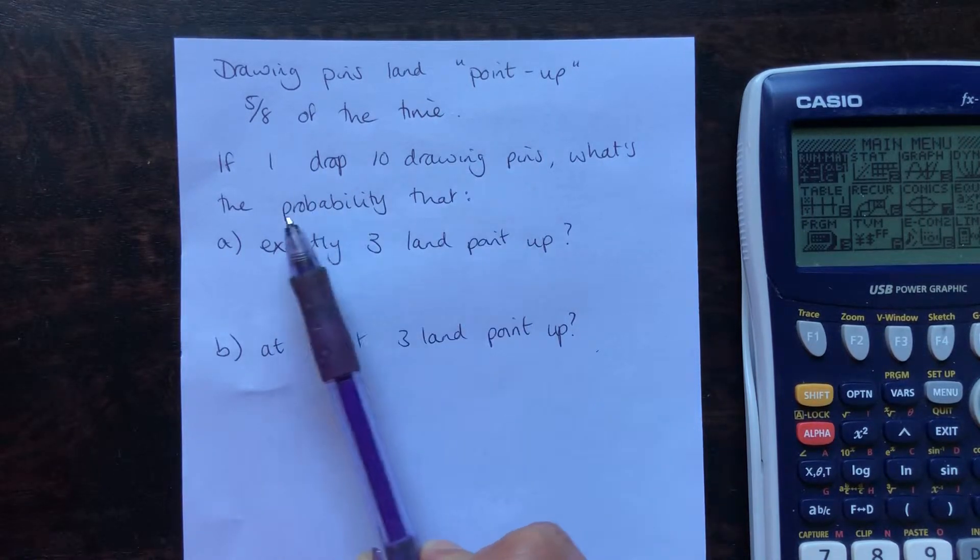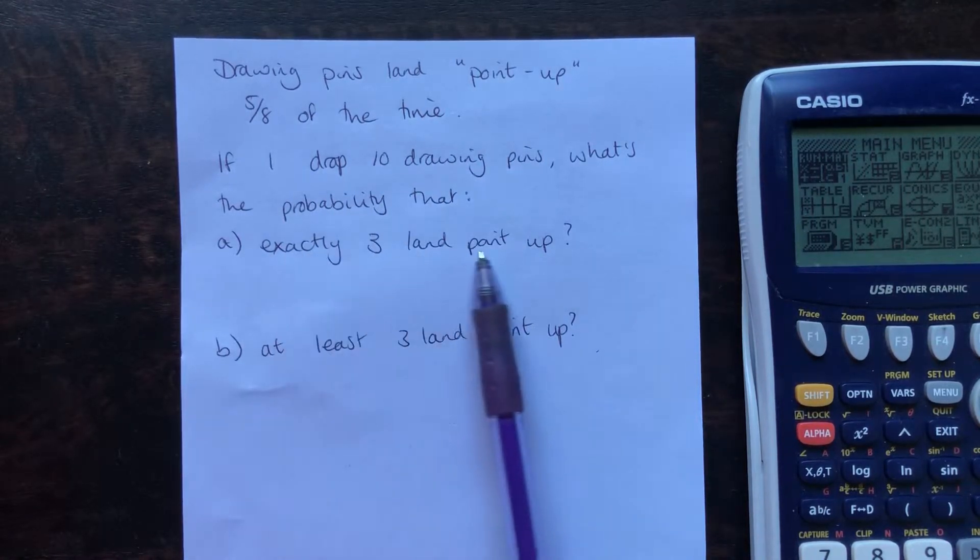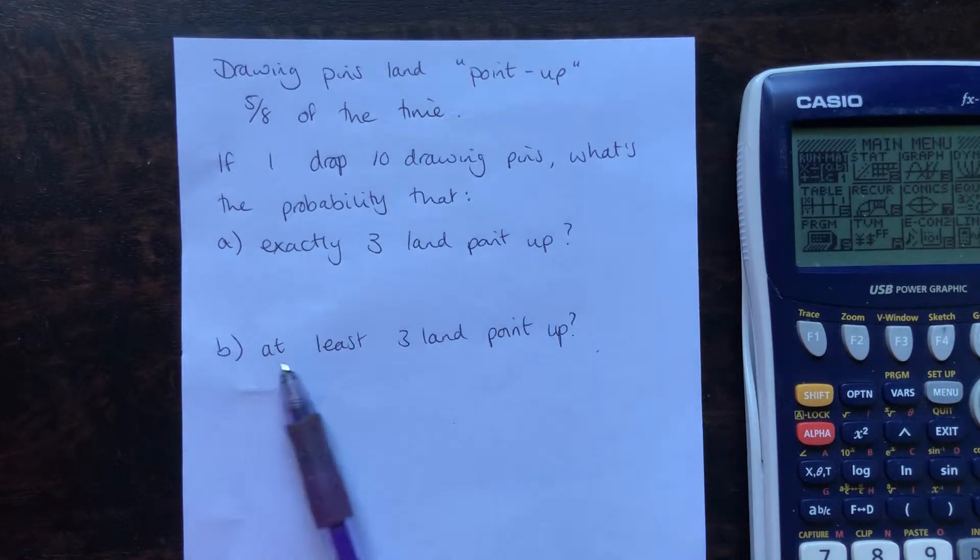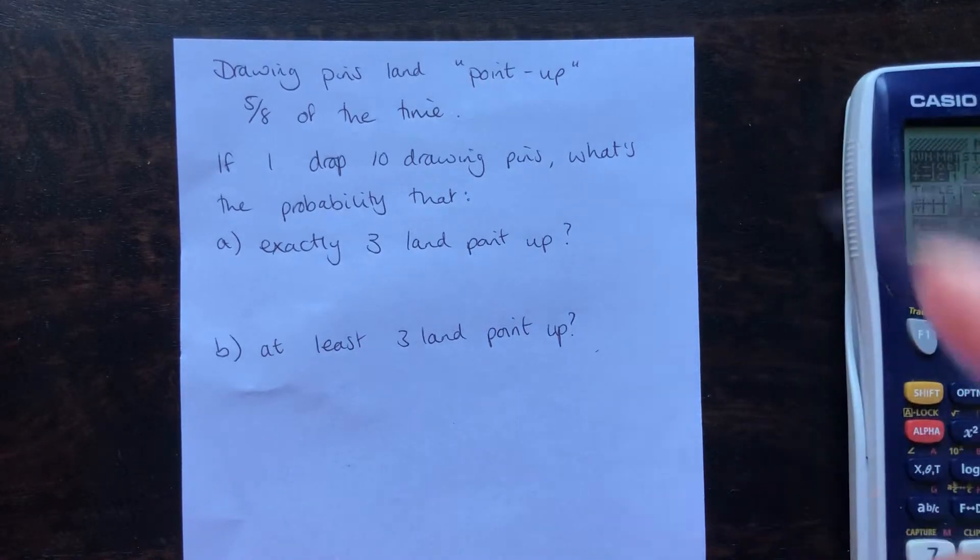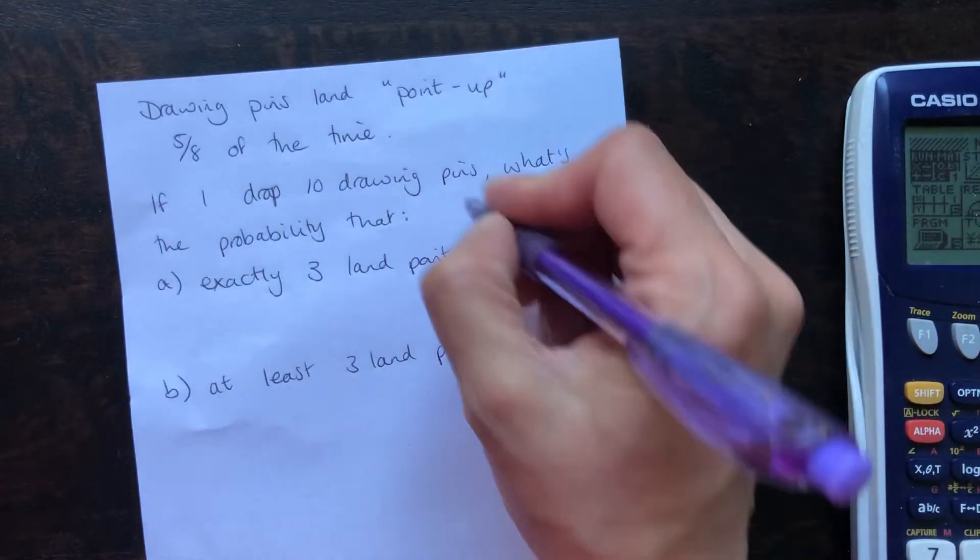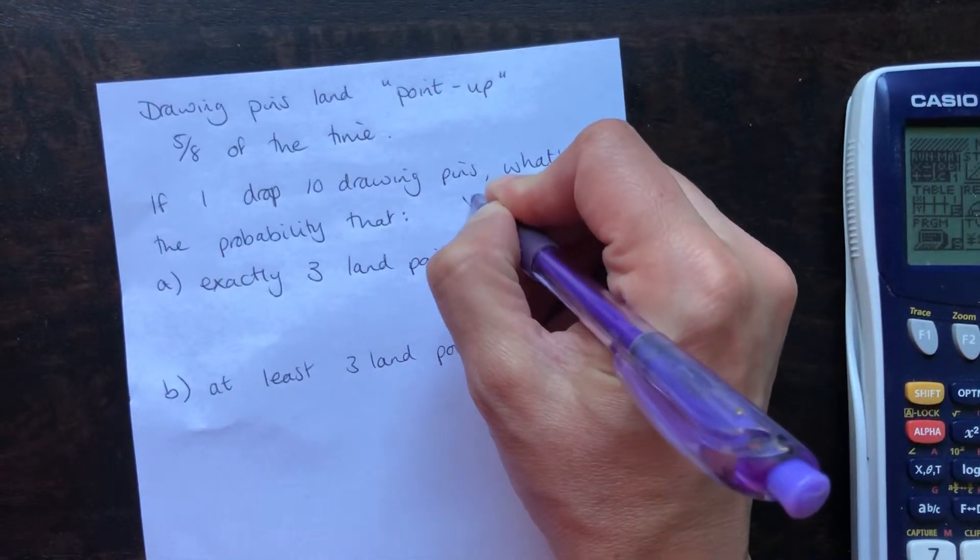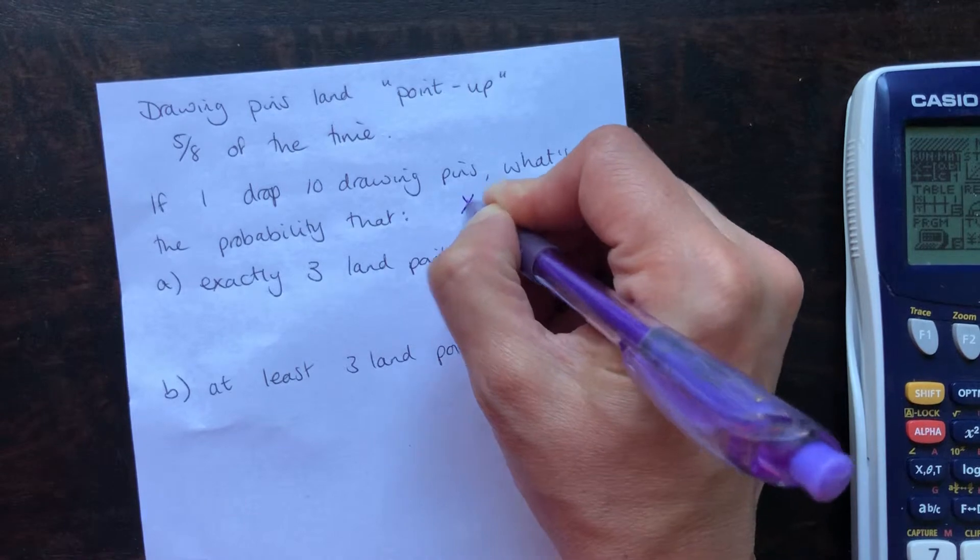If I drop ten drawing pins, what's the probability that exactly three will land point up, and then at least three will land point up? This is a binomial distribution. It fits the requirements for FIST. If you can't remember those, then just go look at that other video about RIPs and FIST.